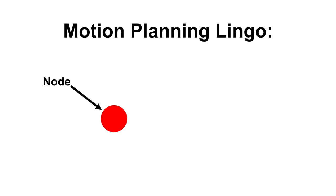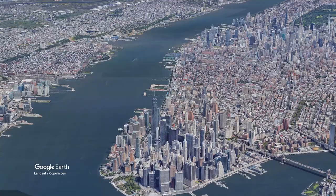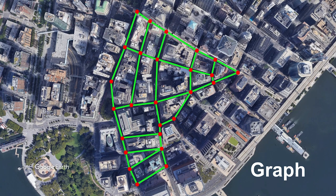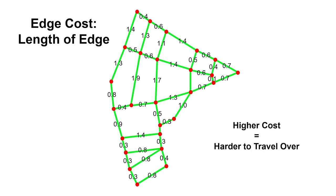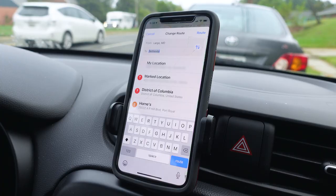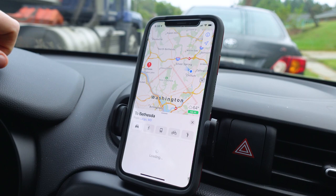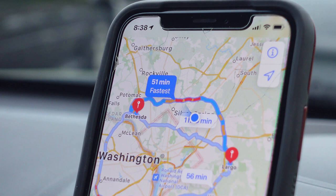Let's talk about motion planning. This is a node or waypoint we can travel to. This is an edge or path we can travel over to go to a new node. A bunch of interconnected edges and nodes is called a map or graph. Edges have an associated cost describing how easy or difficult it is to travel over — normally just the length of the edge, but you can use time or energy instead. When you pull up Google Maps and roads are shown in red, those edges have higher costs and Maps will route you around them.